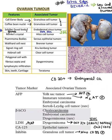Coming on to Reinke crystals, which are seen in hilus cell tumor. Next, psammoma bodies — everyone knows psammoma bodies are seen in serous epithelial tumor.